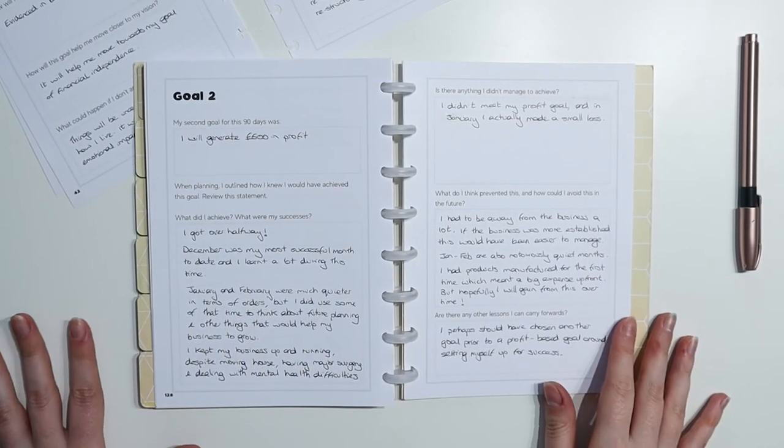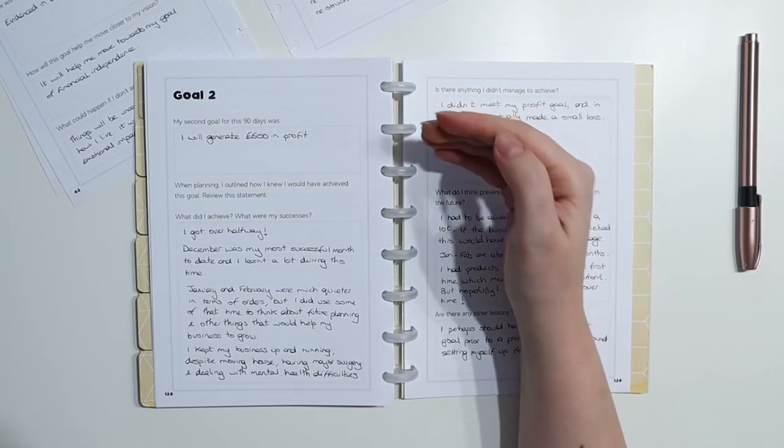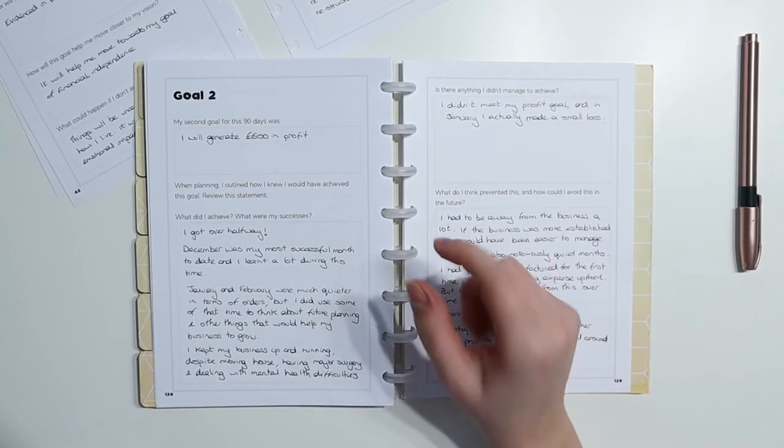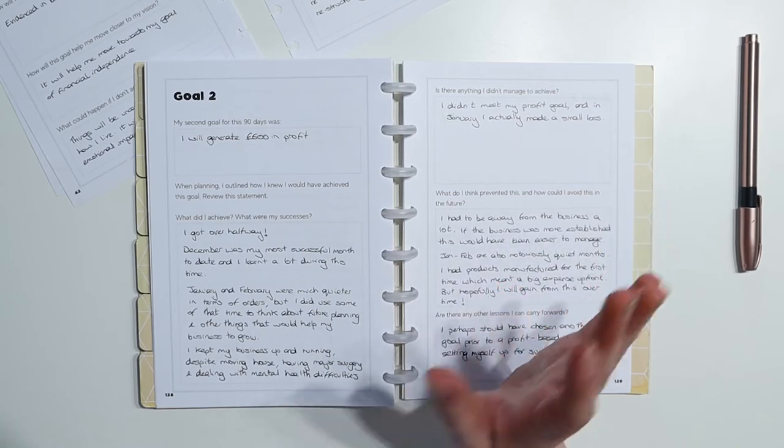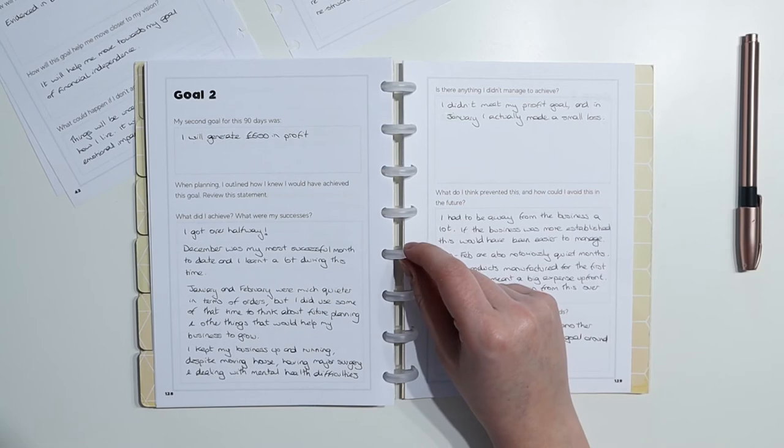So, before I get into evaluating it too soon, I'm going to fill out this spread and come back and show you what I wrote. Okay, so I've evaluated goal two. And again, I feel good about it. So, my second goal was I will generate £600 in profit. What did I achieve? I got over halfway. It's not great. Could have been worse. Yeah. That is just what it is. And I'll be perfectly honest with you. It's hard starting a new business. It's hard.